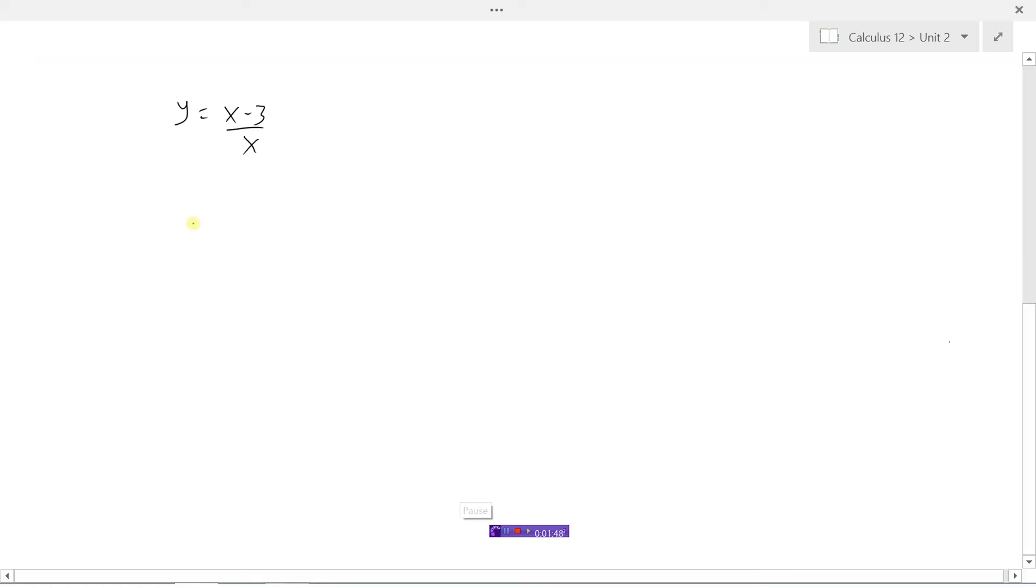Here's another example: y equals x minus 3 divided by x. Here's a y value, I'm going to turn that into x. Here's an x value, I'll turn that into y. Here's another x value, I'll turn that into y. So I've done the switch of x and y, now I need to isolate y.